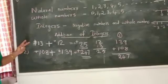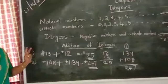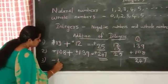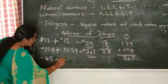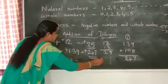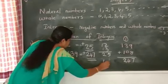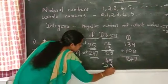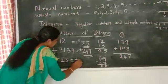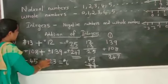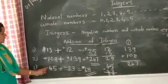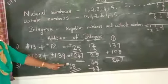Similarly, when we add two negative integers, the answer will be a negative integer. For example, negative 45 plus negative 23. We add 45 plus 23, which equals 68. The answer will be negative 68.